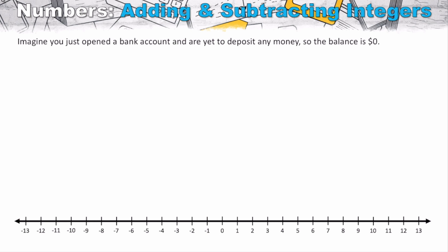To understand this, I want you to picture a bank account. We'll deal with very simple numbers, but bank accounts can exist in positive numbers and negative numbers, and you can also have a balance of zero. Zero means you don't owe anything to the bank but equally don't have any money invested. A positive value means you have that money; a negative balance means you owe the bank money.